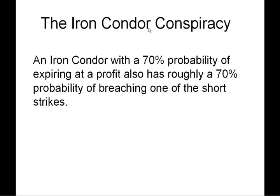The Iron Condor Conspiracy: an iron condor with a 70% probability of expiring at profit also has roughly a 70% probability of reaching one of the short strikes. A lot of people trading high probability iron condors put them on and assume or hope they'll just wake up at the end of the month in a profit. The 70% probability is a statistic borne out over many iterations — if we did this trade a thousand times, 70% of the time we would end up in the profit zone.